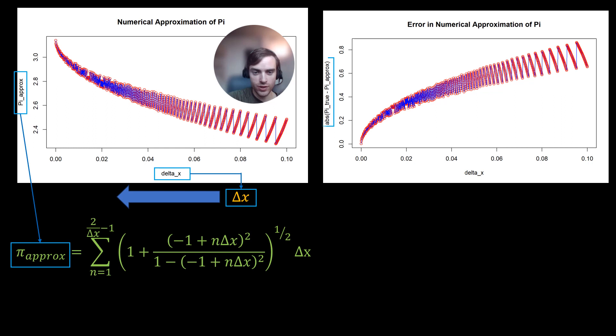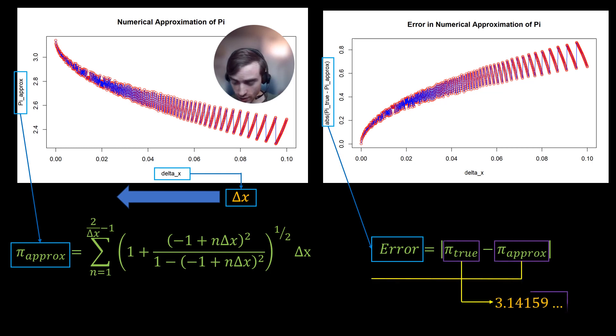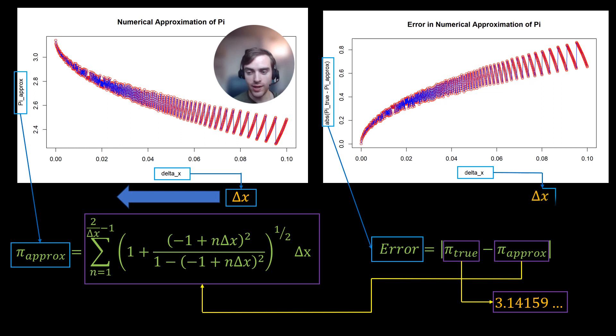And then for the plot to the right, this plot shows the error, which we define as the absolute value of the difference between the true value of pi and the approximated value of pi. This plot shows that as delta x approaches 0, the error also approaches 0, which is good.